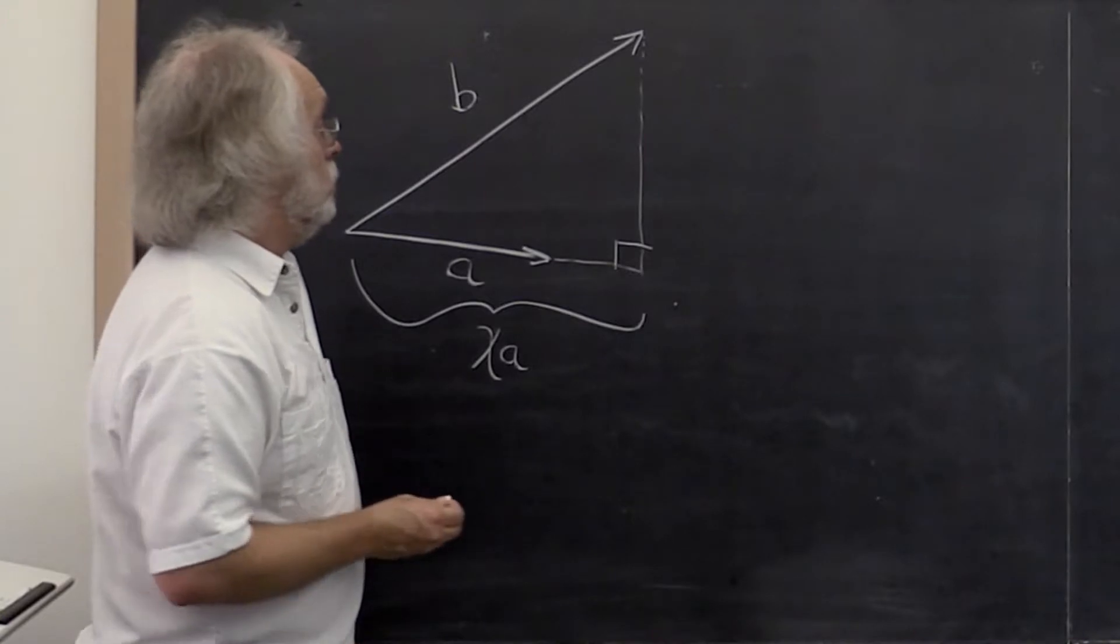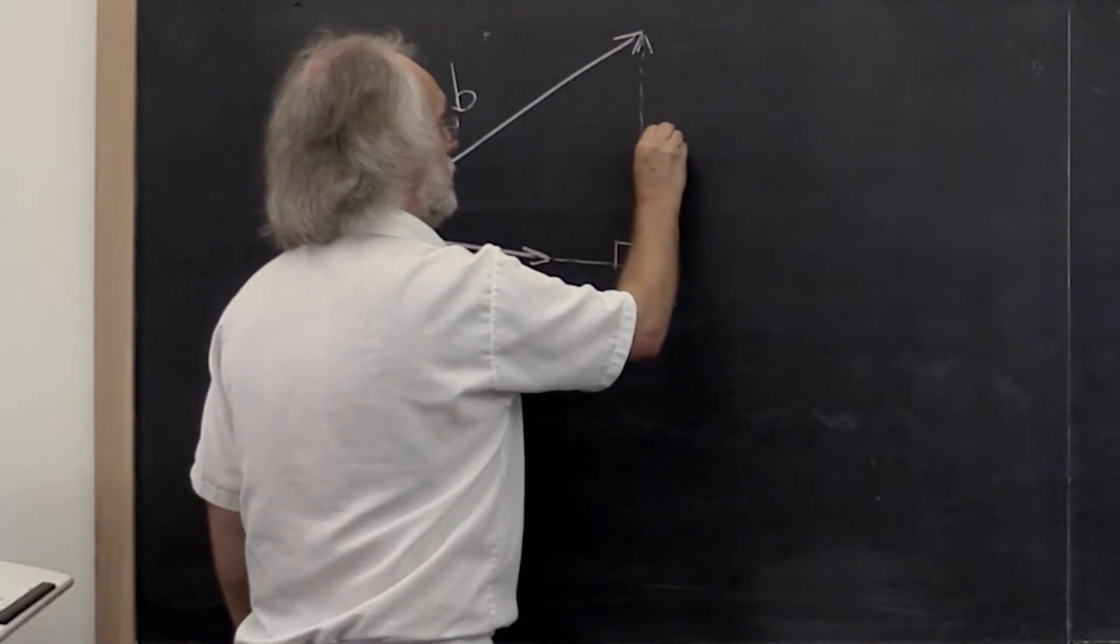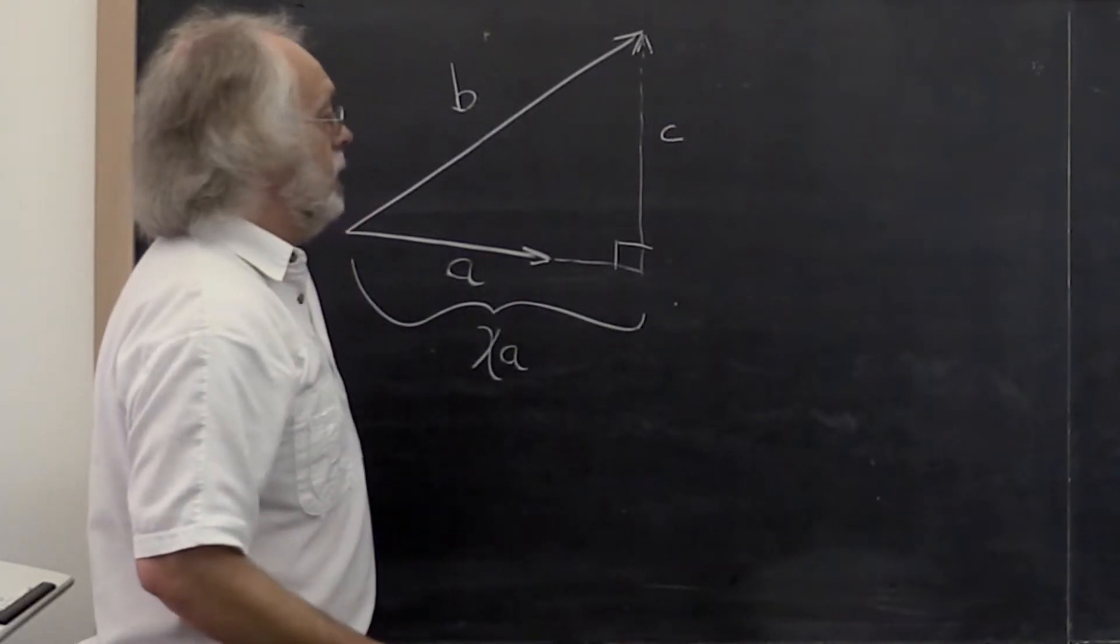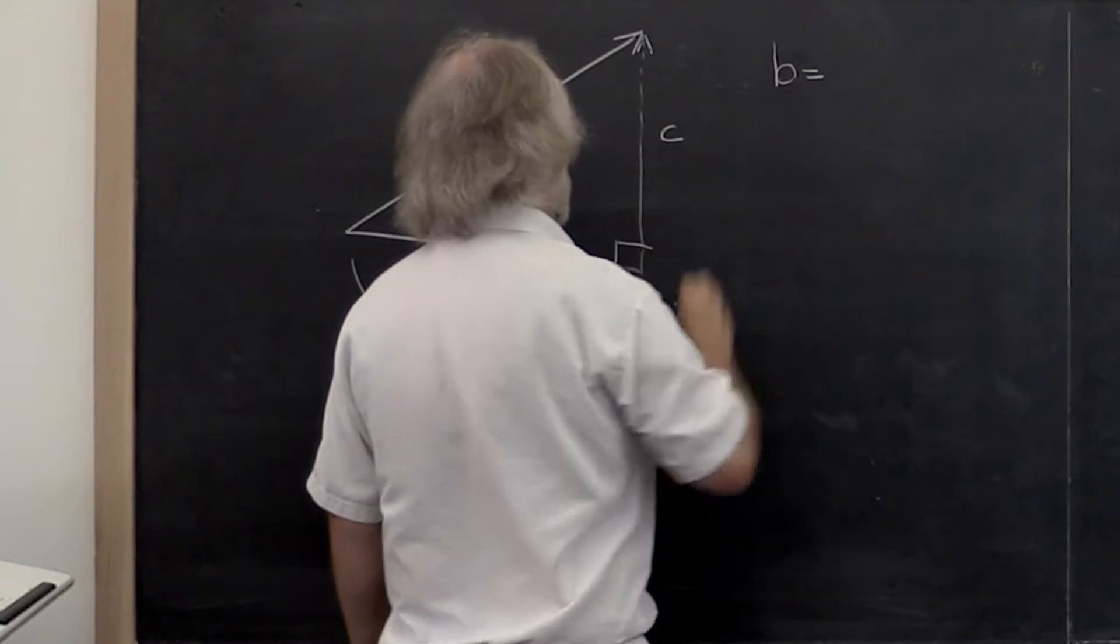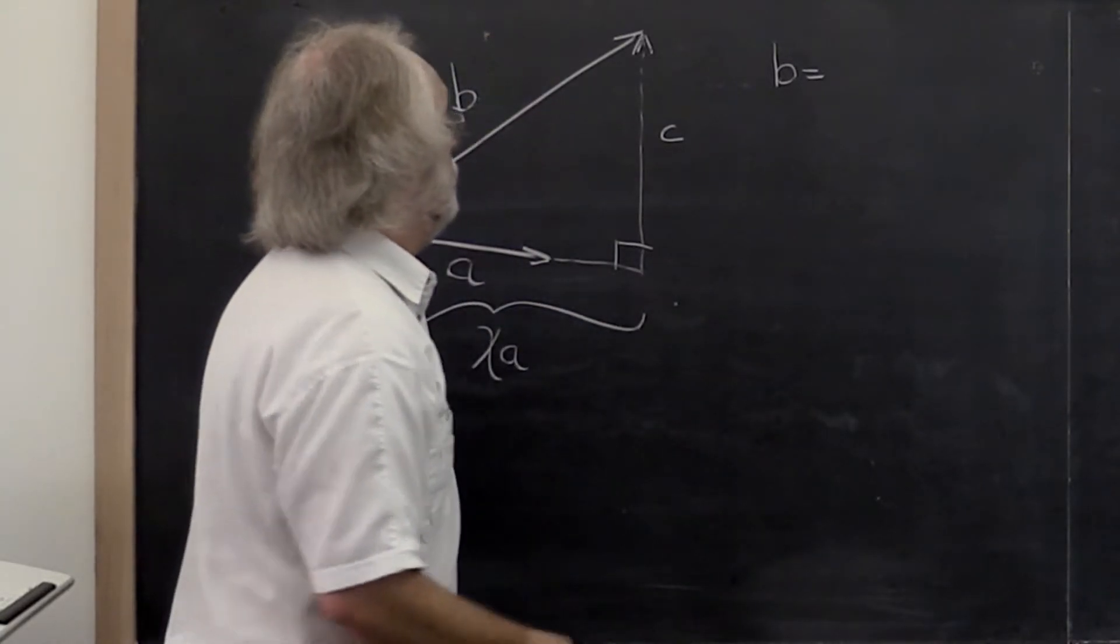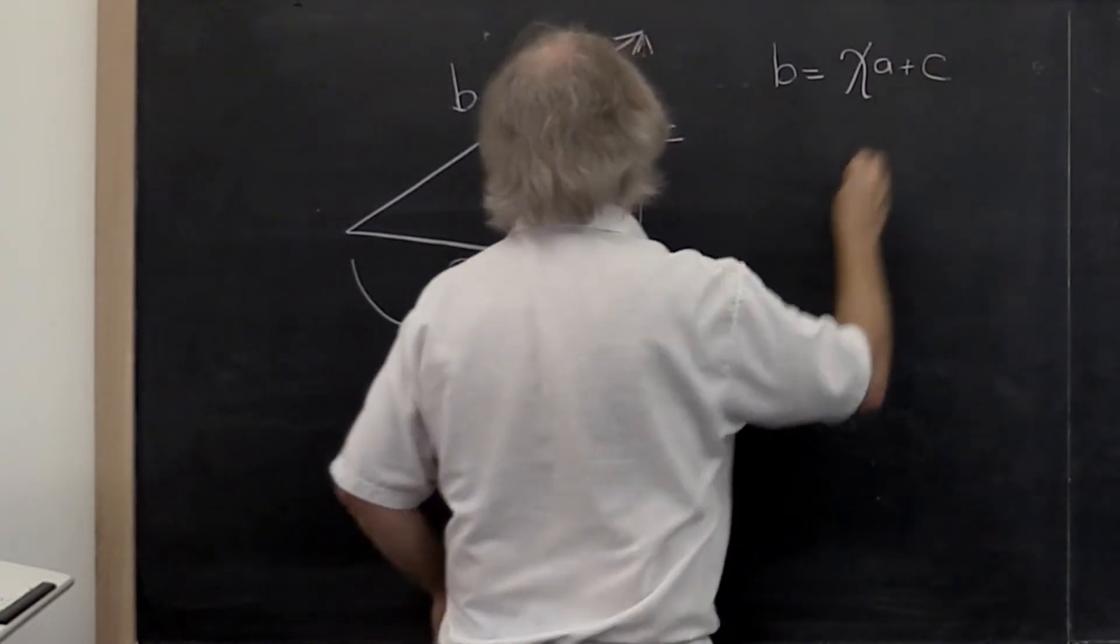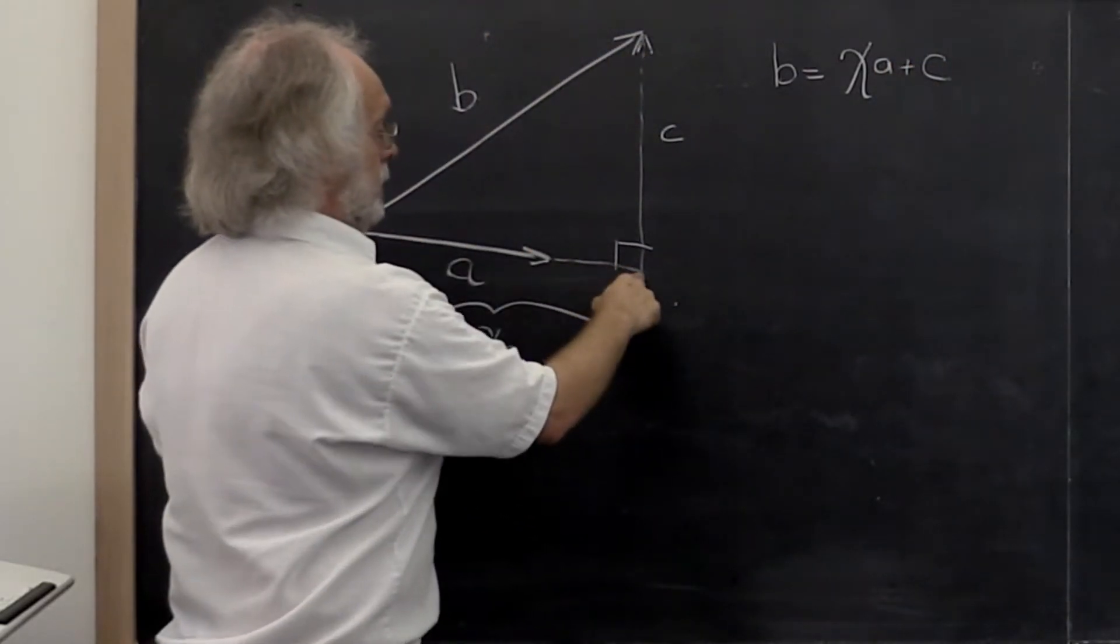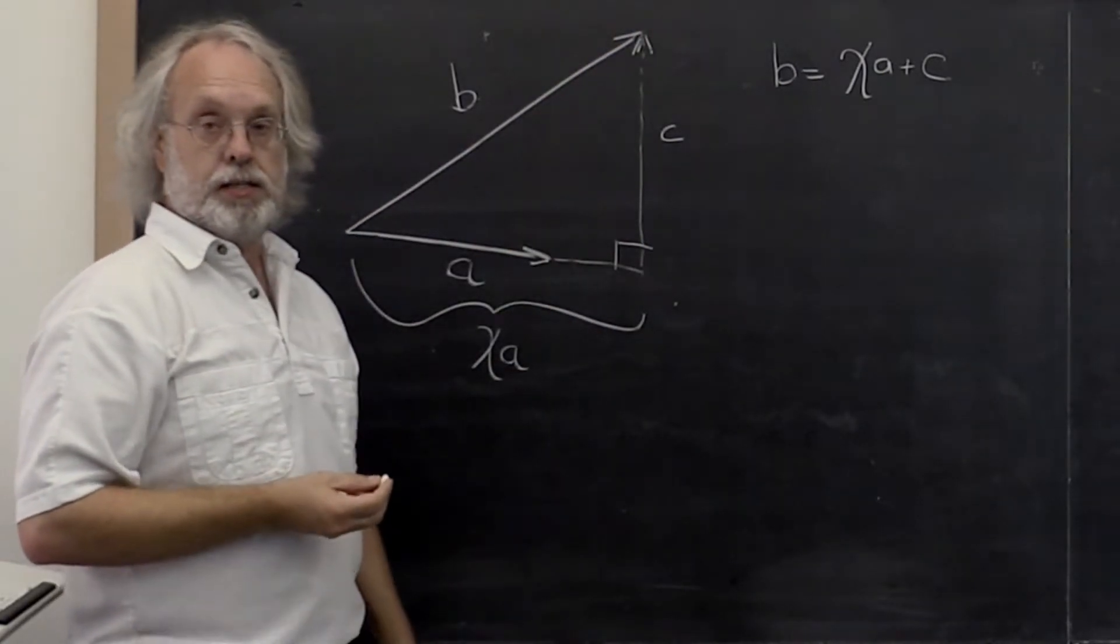Then what do we know? Well, if we call this vector here C, then we know that B is equal to chi times A plus C, because if you go from here to here and then you go from here to here, the result is right there.